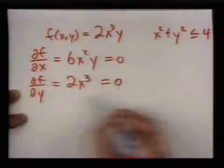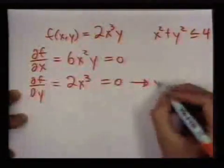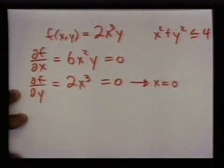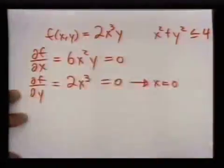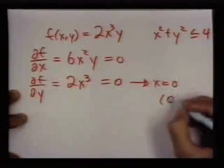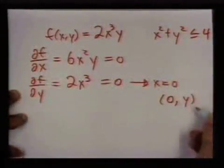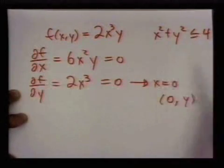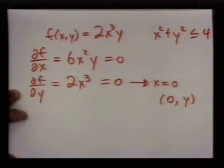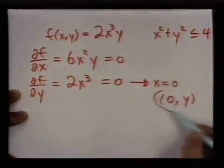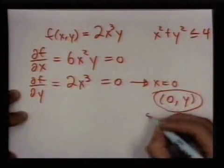So looking at this equation, that happens when x = 0, and if x = 0 then this other equation is automatically 0. So any point of the form (0, y), as long as it's between negative 2 and 2, we have a critical point. So these are all critical points.